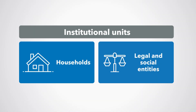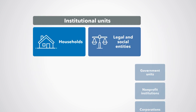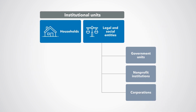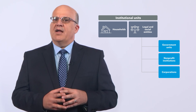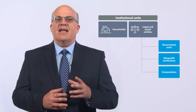There are two main groups of institutional units in macroeconomic statistics: households and legal and social entities. Institutional units in the form of households clearly are not part of the public sector. Legal and social entities can be corporations, non-profit institutions, or government units. Government units are clearly part of the public sector. However, corporations and non-profit institutions can be classified inside or outside the public sector. We must, therefore, take a closer look at these three types of legal and social entities.